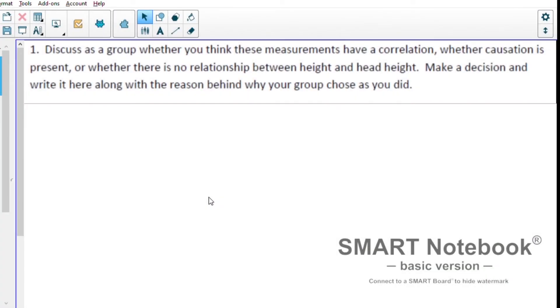I'd like to walk you through the correlation and causation practice project. Our first question here is to discuss whether we think the measurements have a correlation, causation, or neither. We're measuring height and head height and comparing those two.